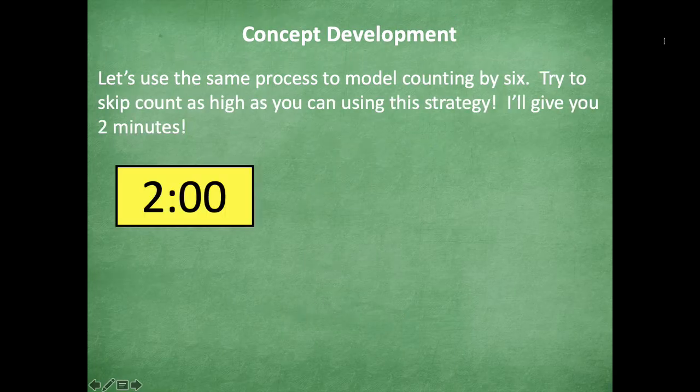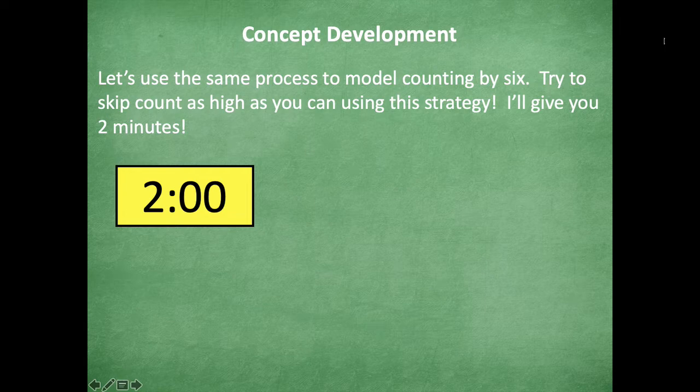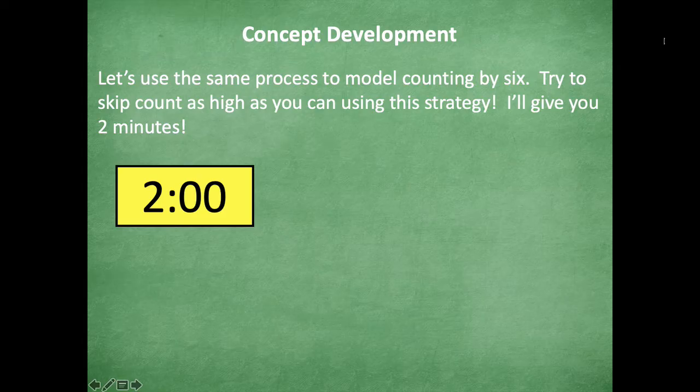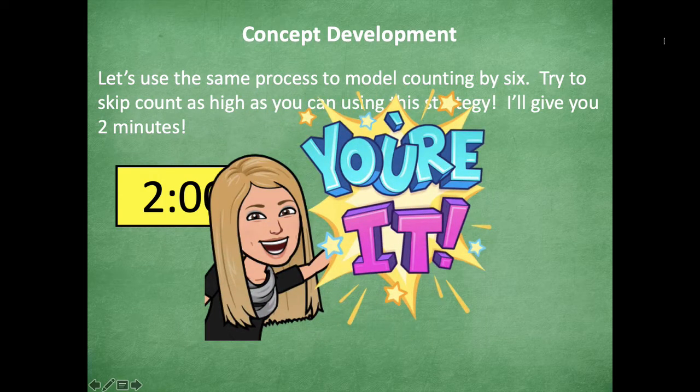Okay friends, so we're going to use the same process to model counting by six. I want you to try and skip count as high as you can using this strategy. So you're going to model and we're going to draw it out just like I did. Okay, where you're breaking apart to either make a ten or to just add the ones. And you're going to try and go as high as you can to solve as many as you can in two minutes. If you get all the way to 60, you're a rock star.